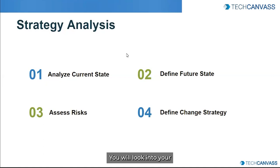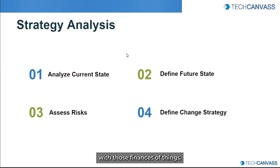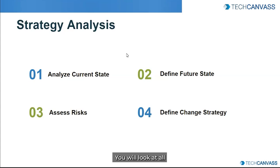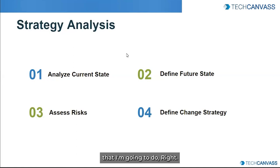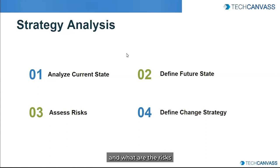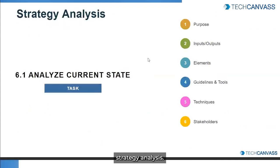What kind of strategy are you going to follow to reach that stage — that will be done by task number four: define change strategy. During this entire transition from your current state to your future state, there will be risks involved. Imagine today you don't have a house but you're thinking that someday in future you want to buy one. Right now you'll analyze your current state, look into your finances, look at all the risks associated with your finances. You look at your capabilities, all possible options available, and then you define your future state — what your house is going to look like. What kind of strategy do you need to build and what are the risks involved? That's what this knowledge area — strategy analysis — is all about.